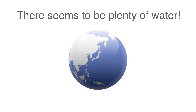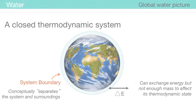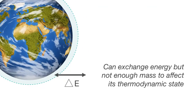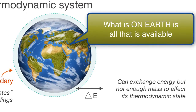Recall that the earth is essentially a closed thermodynamic system. This means it can exchange energy with the surroundings, such as incoming solar radiation, but it cannot exchange a significant amount of mass with the surroundings to affect its temperature, pressure, and volume. What this means is that matter needed for living must already be on earth.